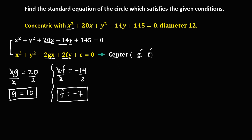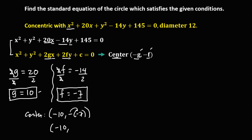To find the center: the center is at negative g and negative f. Since g is 10, negative g is negative 10. Since f is negative 7, negative f is positive 7. So the center is negative 10 and positive 7.